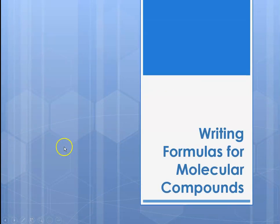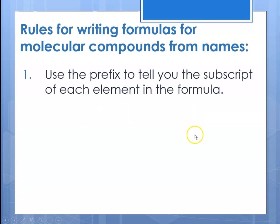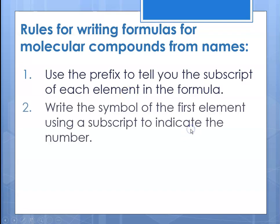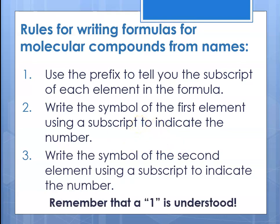Now we'll talk about writing formulas for molecular compounds from their names. There are rules: we use the prefix to tell us the subscript of each element in the formula. Write the symbol of the first element using the appropriate subscript to indicate the number, then write the symbol of the second element with a subscript to indicate the correct number. Remember that 1 is understood in chemistry — we never use subscripts of 1.